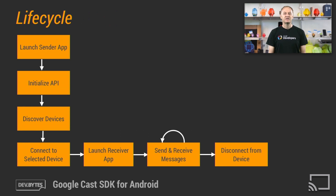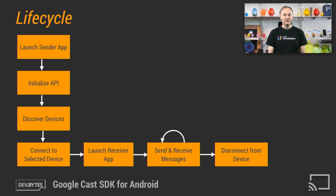Let's take a look at the typical lifecycle of a Cast sender app. When the sender app is launched, Cast devices need to be discovered on the local network. Once the user selects the device, the sender app will connect to that device and launch the receiver app. The sender app then creates a message channel to the receiver app to send and receive messages. The user can also disconnect from that device.